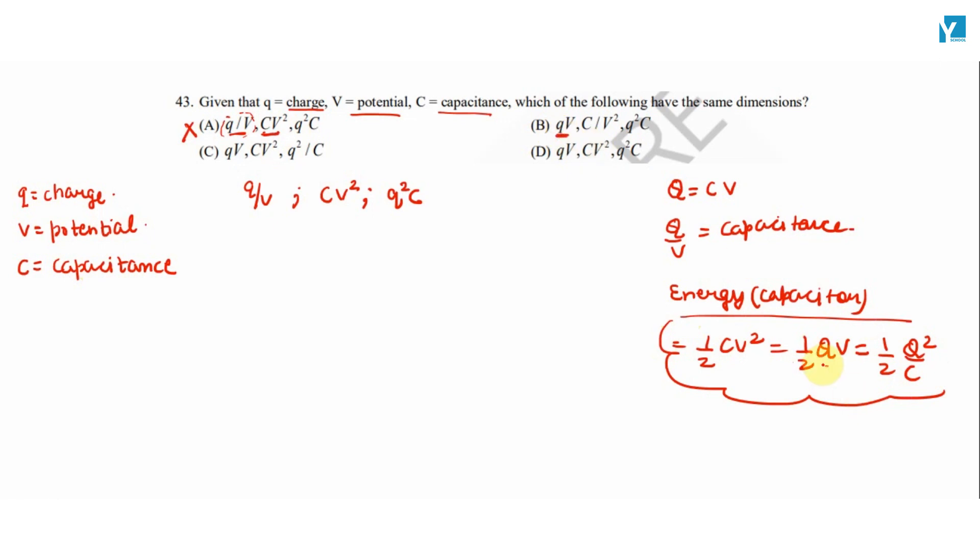QV, QV ki dimension toh energy ki hai. Lekin C by V square ki jo dimension ho energy ki nahi hai, balki CV square ki dimension energy ki hoti hai. So ye toh in quantities ki bhi same dimension nahi. Matlab option B bhi incorrect hai.